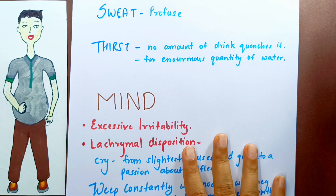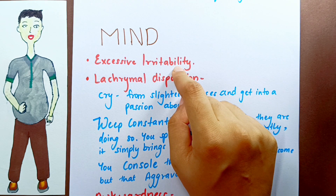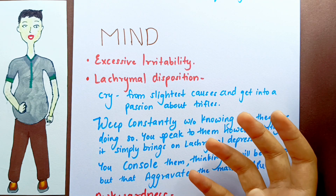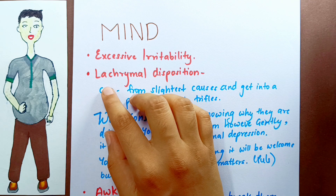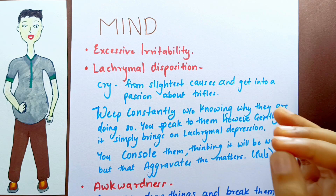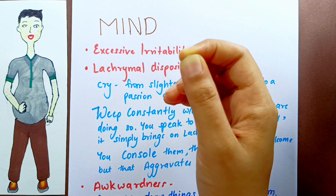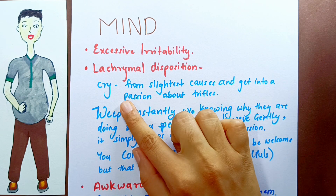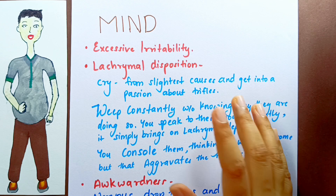Now about the mind of this remedy, as Dr. NM Chaudhary explains. The first point is excessive irritability — Natrium Muriaticum's mental condition is characterized by it. There is also a lacrimal disposition, meaning a tendency to weep. They cry from the slightest causes and get into a passion about trifles. They weep constantly without even knowing why they are doing so.